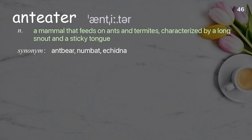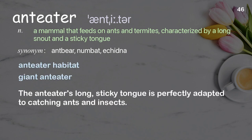Anteater: a mammal that feeds on ants and termites, characterized by a long snout and a sticky tongue. Examples: anteater habitat, giant anteater. The anteater's long, sticky tongue is perfectly adapted to catching ants and insects.